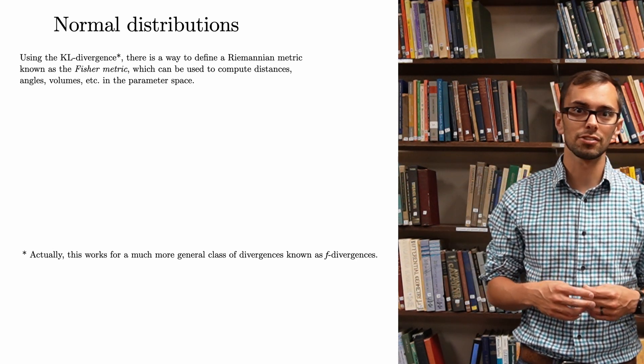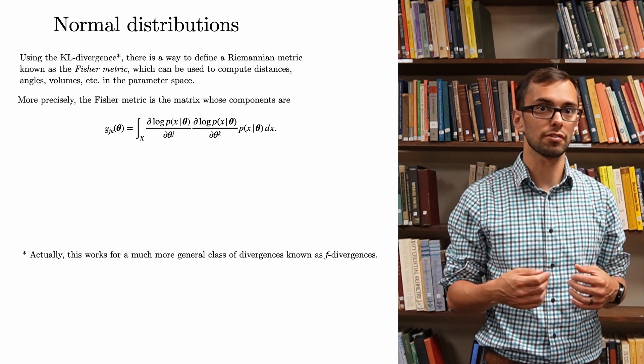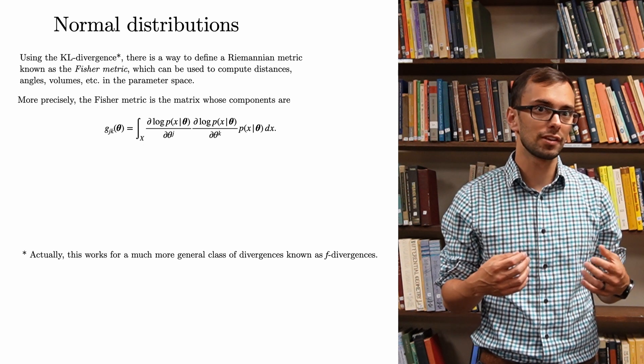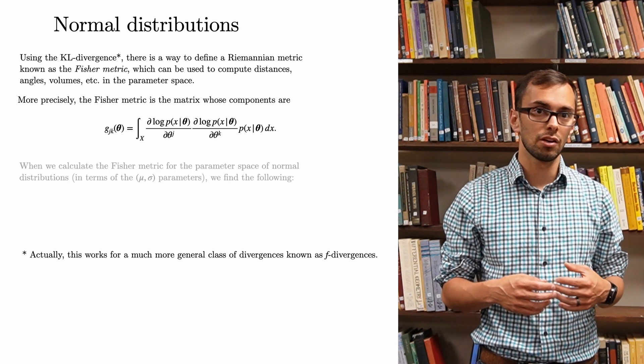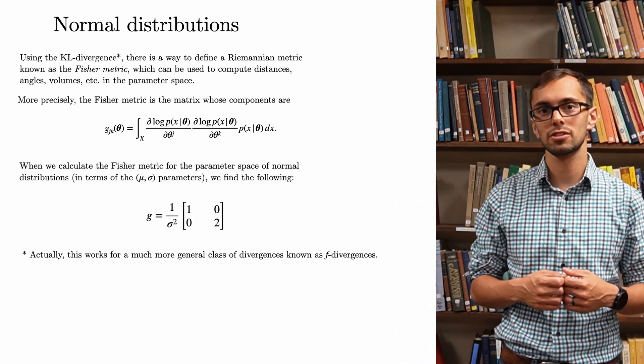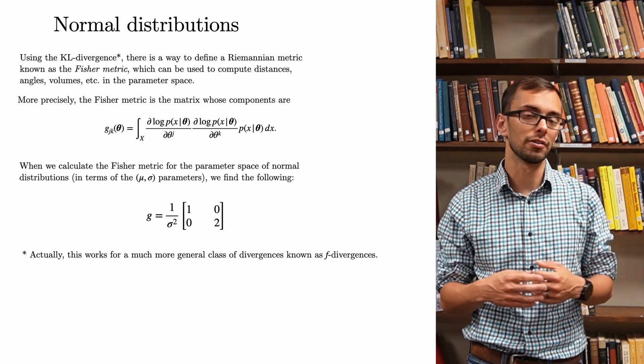More precisely, the Fisher metric is the matrix whose components are the following. Note that in this expression, we are taking derivatives with respect to the parameters, not the points in the sample space. When we calculate the Fisher metric for the parameter space of normal distributions, in terms of their mu-sigma parameters, we find the following.